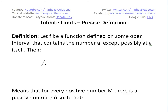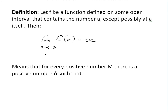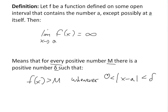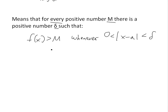Then basically you have this notation: if you have the limit as x approaches a, this is an infinite limit of f(x) equals positive infinity. This basically means for every positive number M, there is a positive number delta related to M such that f(x) is going to be greater than M whenever 0 < |x − a| < delta. To get an idea of this precise definition and make more sense of it, I'll graph this to illustrate it graphically.